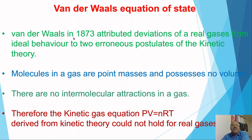Van der Waals in 1873 took into consideration that real gases have appreciable masses and appreciable intermolecular attractions. However, as per the kinetic theory of gases, it is considered that molecules in the gas are point masses and possess no volume, and the second postulate states there are no intermolecular attractions in the gas. These are the two postulates in which the correction is suggested by Van der Waals.